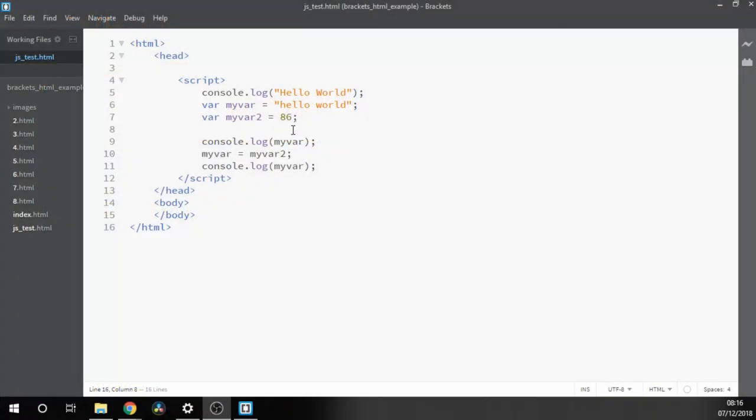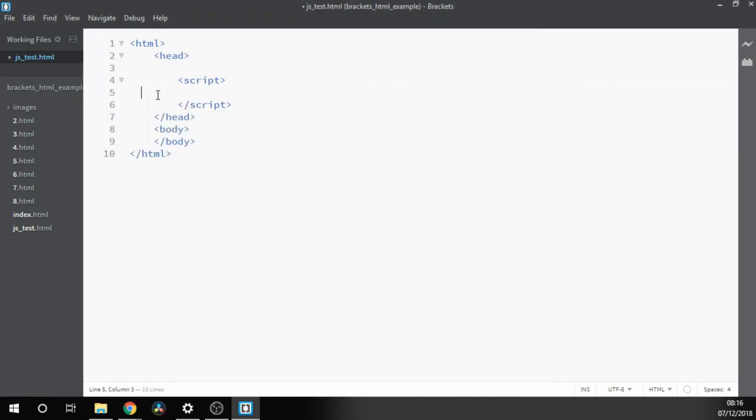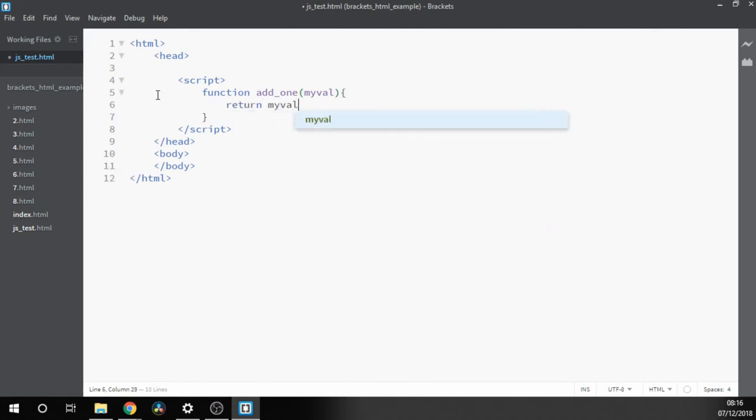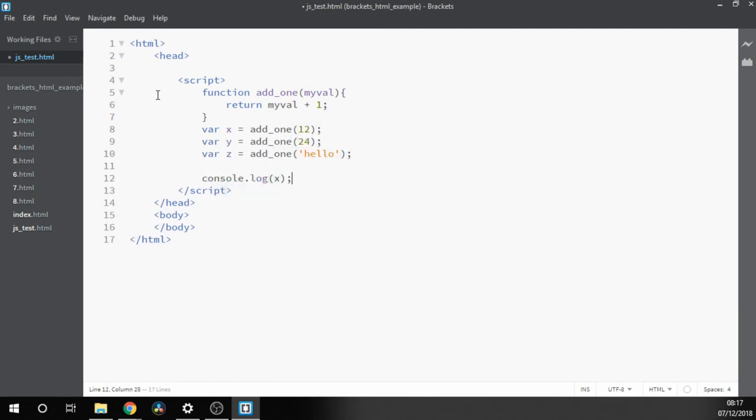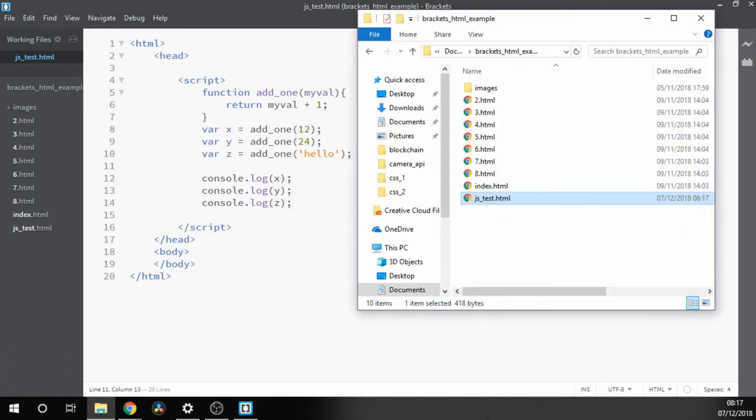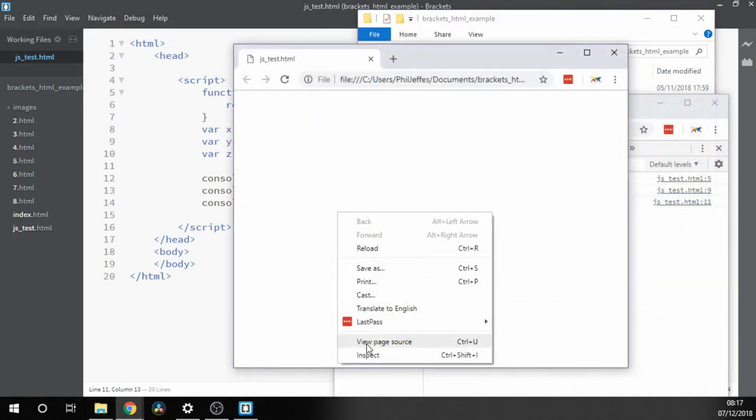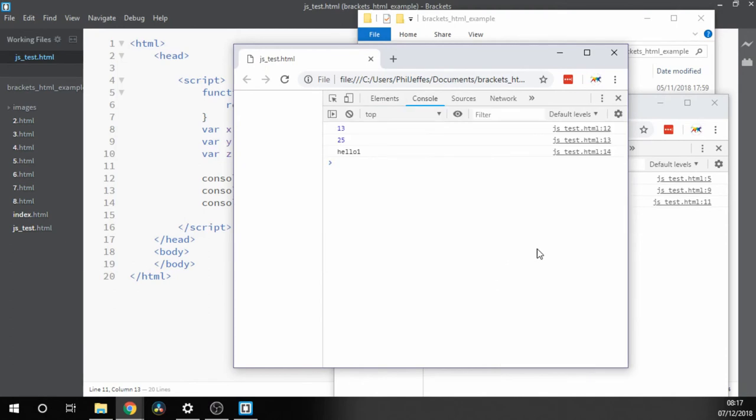If we go back to brackets, we can get rid of all of the code before and create a function. And now that we have our code, we can run it in the way that we did before. And open up the console. And we can see our expected outputs 13, 25, and hello1.